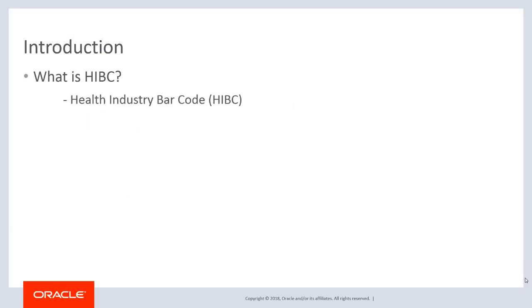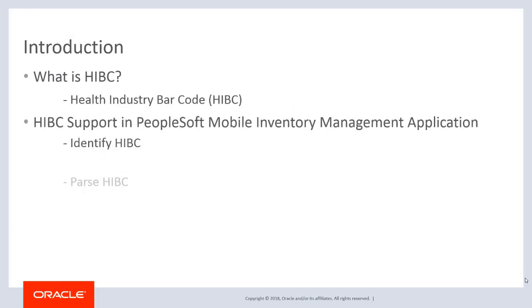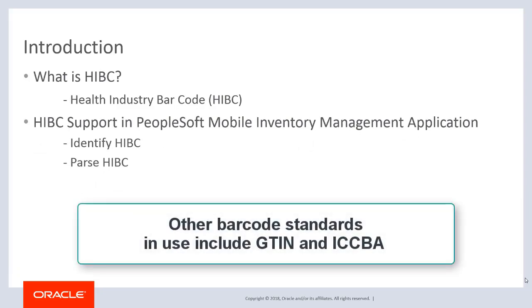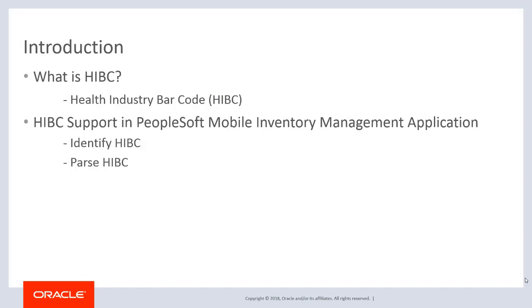Health Industry Barcode, or HIBC, is the primary barcode standard used in the healthcare industry to support inventory tracking requirements. Although other barcode standards like Global Trade Item Number, or GTIN, and International Council for Commonality in Blood Banking Automation, or ICCBA, are in use, HIBC is widely used to ensure uniformity across supply chain partners in the healthcare industry.